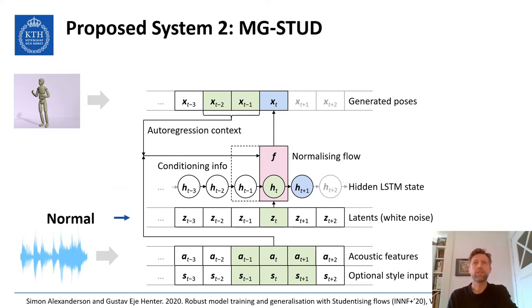The second system is based on our recent ICML workshop on invertible networks paper, where we applied ideas from robust statistics to normalizing flows. We showed that changing the latent distribution from a gaussian to a student t-distribution makes model training more robust and less sensitive to outliers. My hope was that this would have some positive effects on the GENEA challenge due to noisy motion capture data or uncommon gestures seen in the data set.